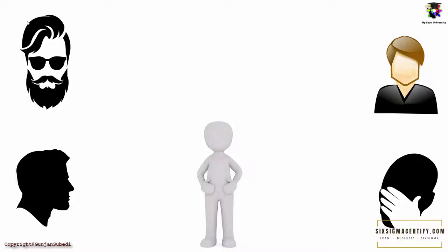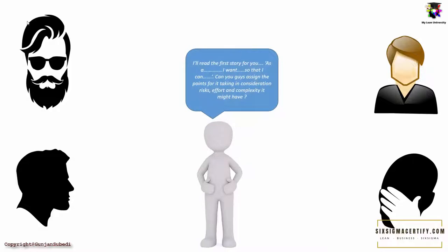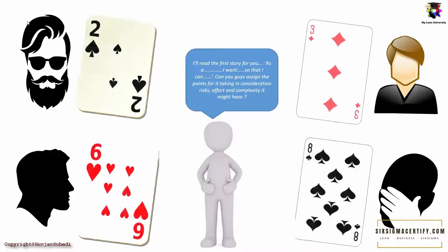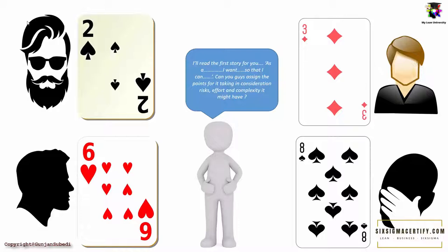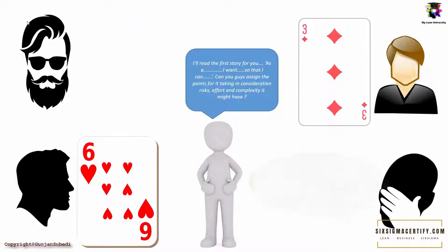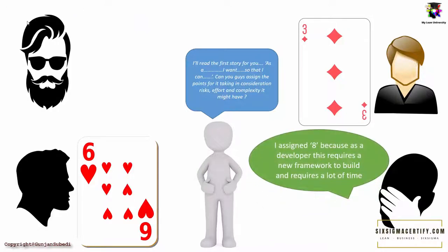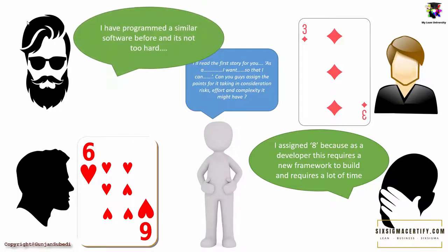Let's see a simple example to understand the planning poker method. Suppose the product owner comes and reads the story and the team discusses about the story, and in the first round they hold up 2, 3, 6 and 8. Suppose the guy assigning the 8 says that he is a developer and this requires a new framework to build and he requires a lot of time. The person assigning the card number 2 may say that he had programmed the software before with a similar framework and it's not that hard.